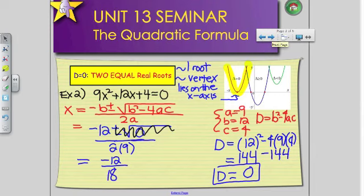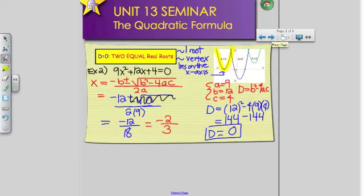So now I have to reduce this. Negative 12 over 18. What number divides evenly into negative 12 and 18? 6. Good. So negative 12 divided by 6 is going to give me negative 2, and 18 divided by 6 is positive 3.